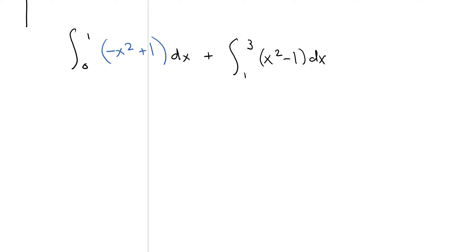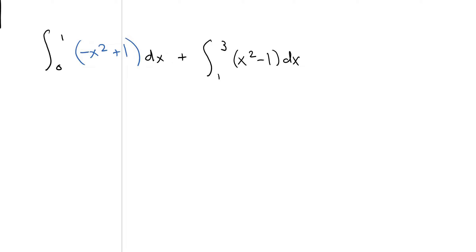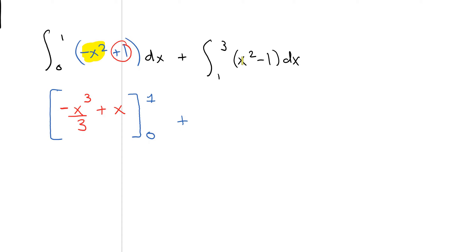There's your integral setup. Now evaluate these using the fundamental theorem of calculus. The antiderivative of negative x squared is negative x cubed divided by 3, and the antiderivative of 1 is x. That's in square brackets from 0 to 1. Plus: the antiderivative of x squared is x cubed divided by 3, and the antiderivative of negative 1 is negative x, in square brackets from 1 to 3.